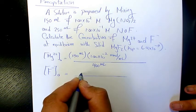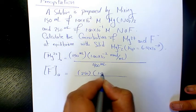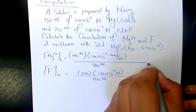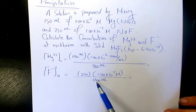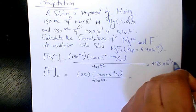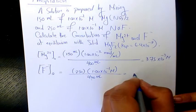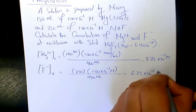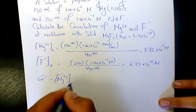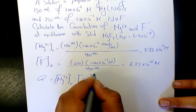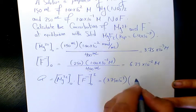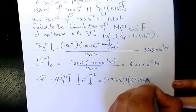The fluoride ion initial concentration is 250 mL times the concentration of sodium fluoride, divided by the total volume of 400 mL, because we mix them together. So the initial concentration after mixing is 3.75×10⁻³ M for Mg²⁺ and 6.25×10⁻² M for F⁻. Then Q equals [Mg²⁺] times [F⁻]², which is 3.75×10⁻³ times (6.25×10⁻²)².